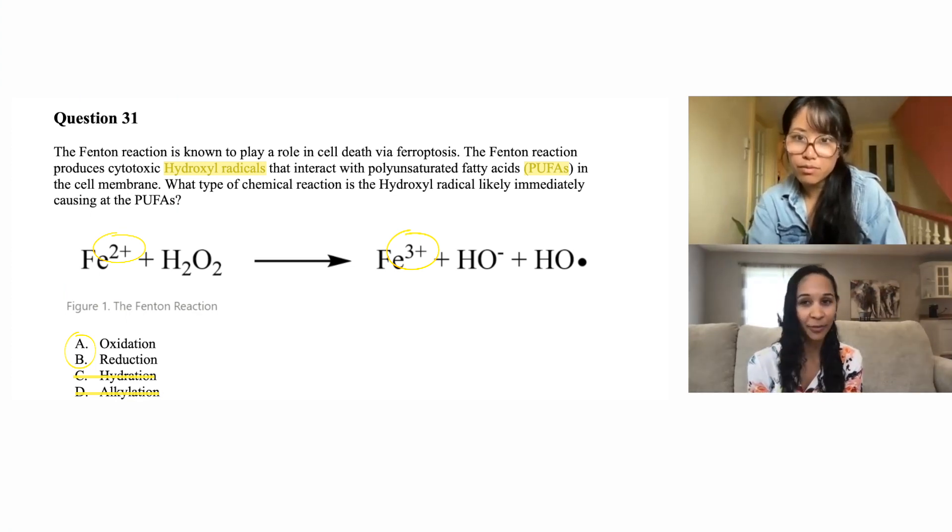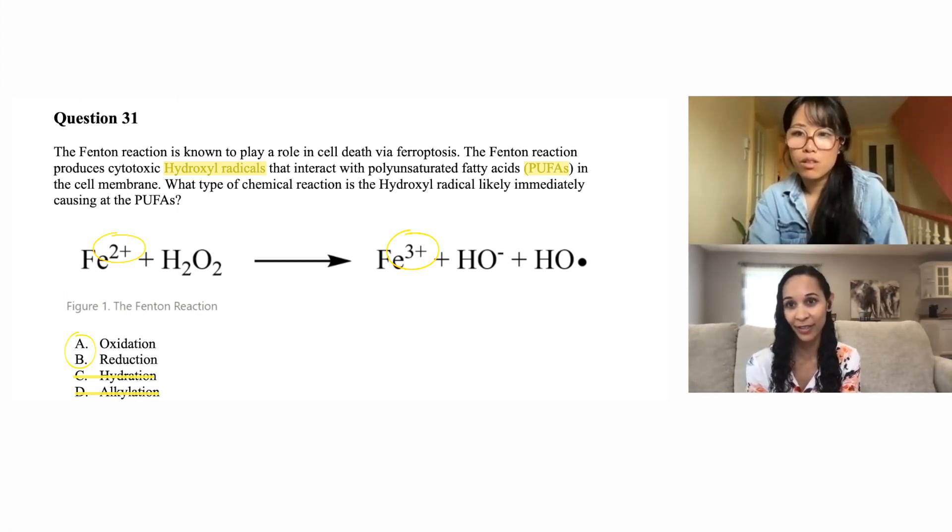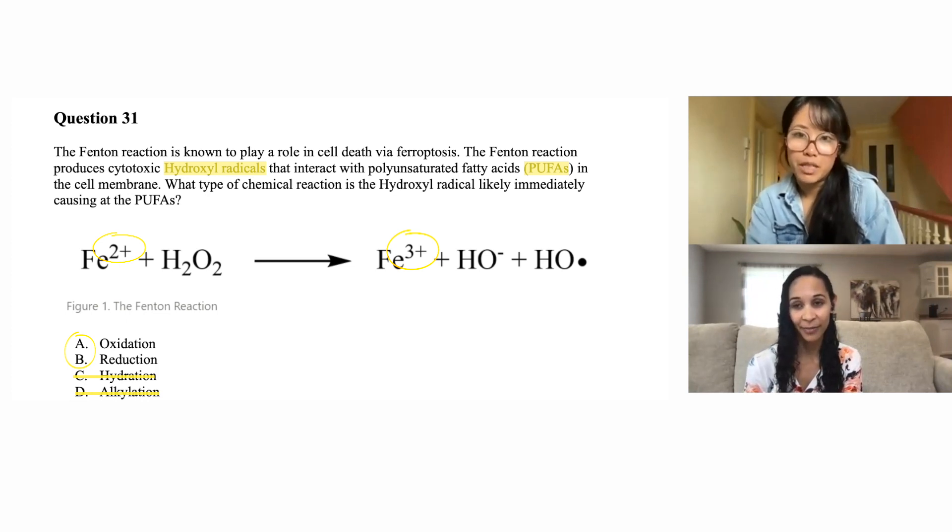What do you think will be more favorable, the hydroxyl radical to accept another electron or to give it to PUFA? Probably give it to the PUFA. So if the PUFA receives an electron, what is happening to it based on OIL RIG? It must be becoming reduced. Exactly.